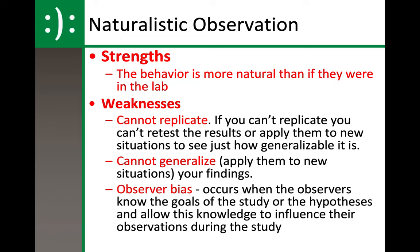The strength of naturalistic observation is that behavior is more natural than if subjects were in a lab. Animal studies are important because we can analyze animals closely related to us in cognitive abilities — bonobos, chimps, apes, and monkeys, all closely related to our genome, are highly beneficial. We've talked about rats before — why are rats used so much? Rats are survivors; they know how to find a way, especially when it comes to survival methods.